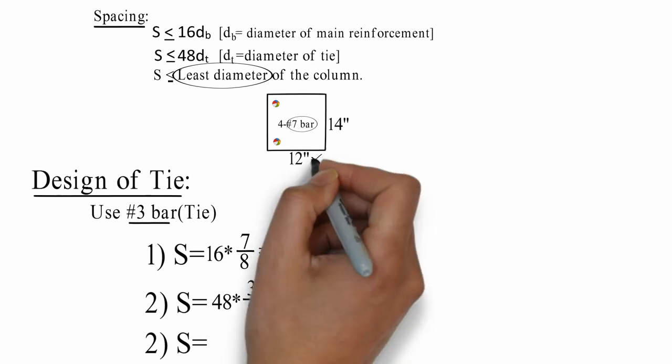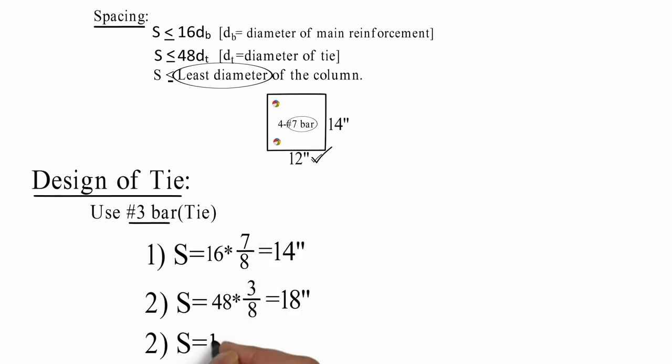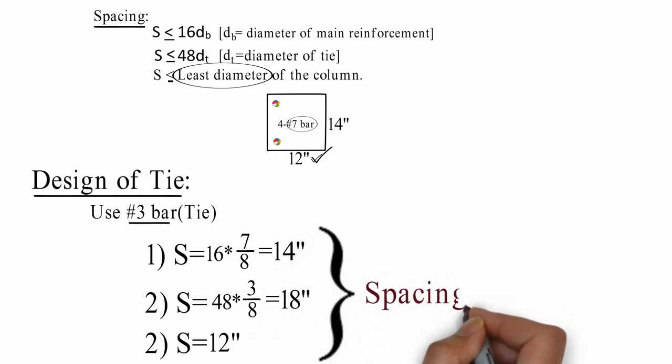S equals least dimension, 12 inch. We take minimum value, so spacing 12 inch center to center distance.